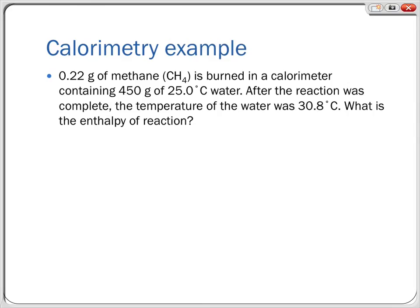Let's look at an example. Suppose we have 0.22 grams of methane, CH₄, burned in a calorimeter containing 450 grams of water initially at 25.0°C. After the reaction is complete, the water temperature is 30.8°C. We want to find ΔH° for this reaction. Since it says 'burned,' it's a combustion reaction: CH₄ plus O₂, producing CO₂ and H₂O as the oxides of both elements.